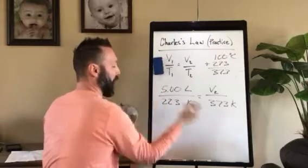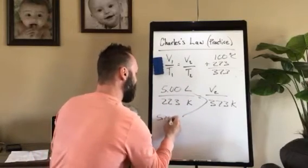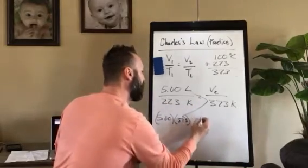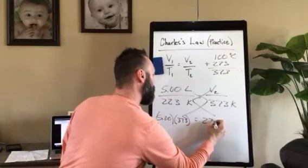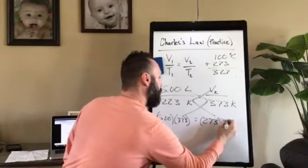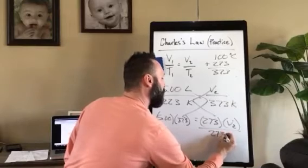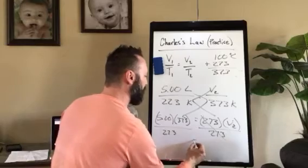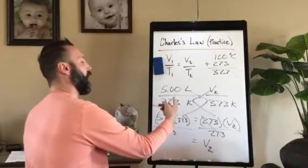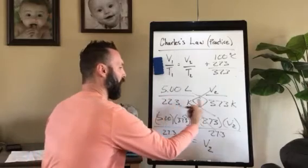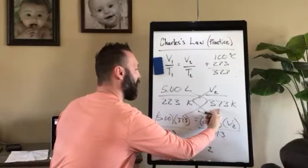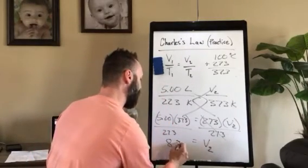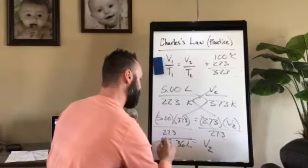Now we're going to go ahead and cross multiply and divide. 5 times 373 equals 223 times V2, divide by 223. Our volume, when it's warmed from 223 Kelvin up to 373 Kelvin, it's going to go from five liters all the way up to 8.36 liters.